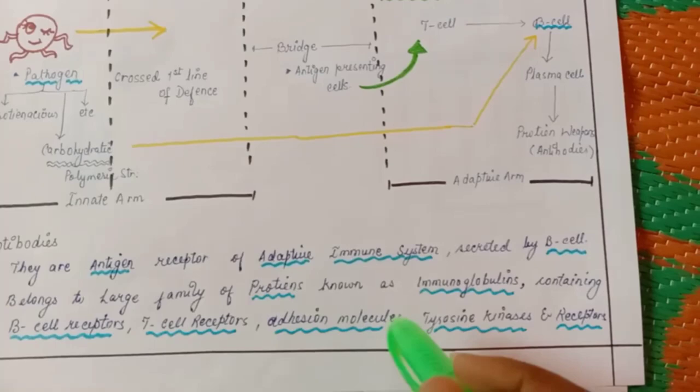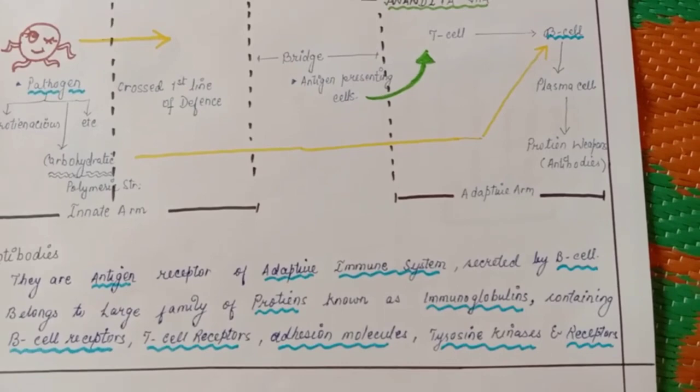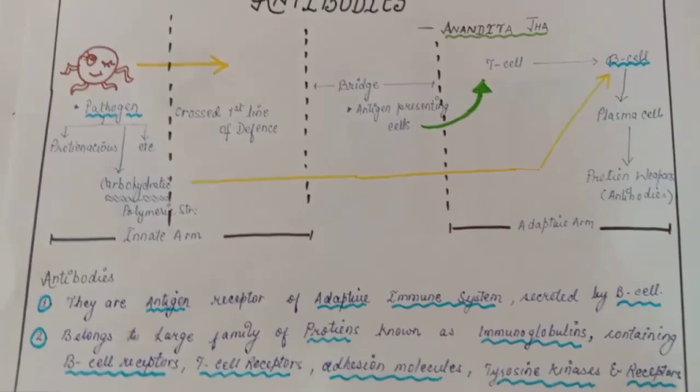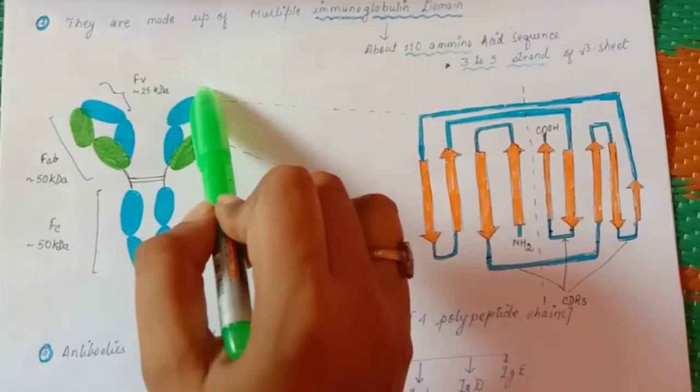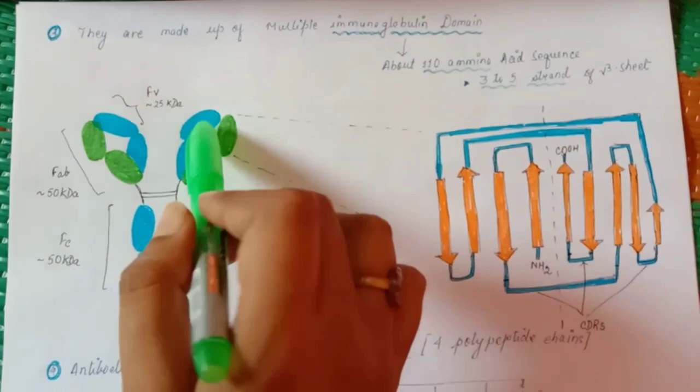We will see how we could study about the antibodies. We will see the structure of antibody. I have taken this image from Google to make it very simple. You can see this is the typical structure of antibody.